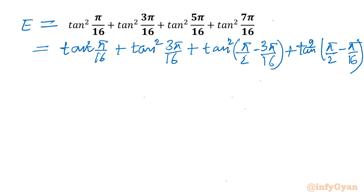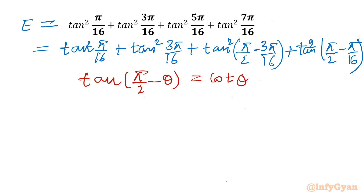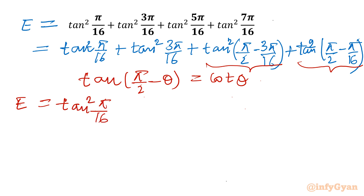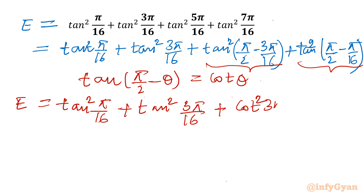Now I will use one trigonometric complementary identity. I will write tan(π/2 − θ) = cot θ. So here and here we will write cot. So E will become tan²(π/16) + tan²(3π/16) + cot²(3π/16) + cot²(π/16).